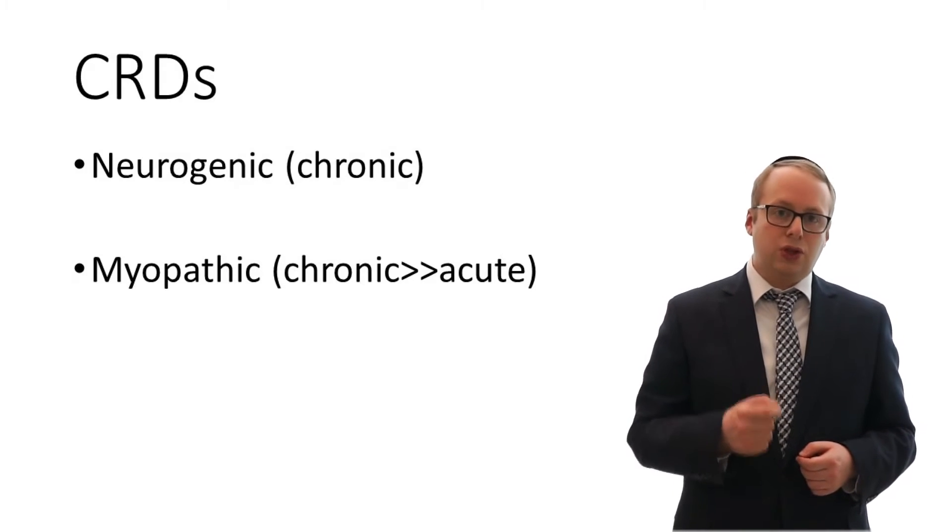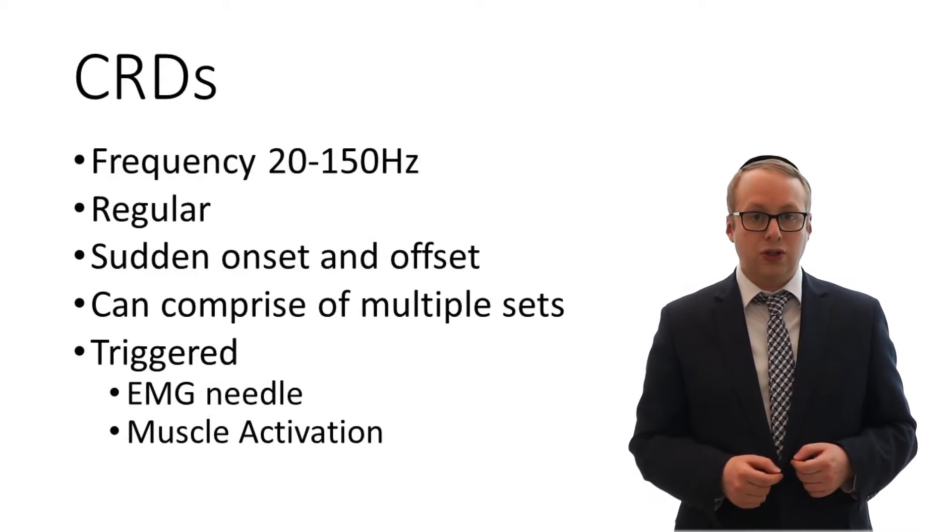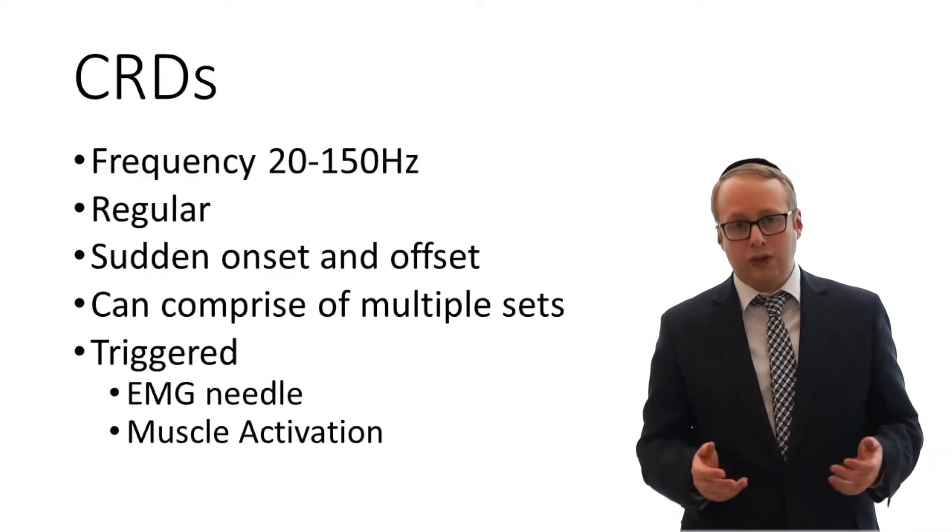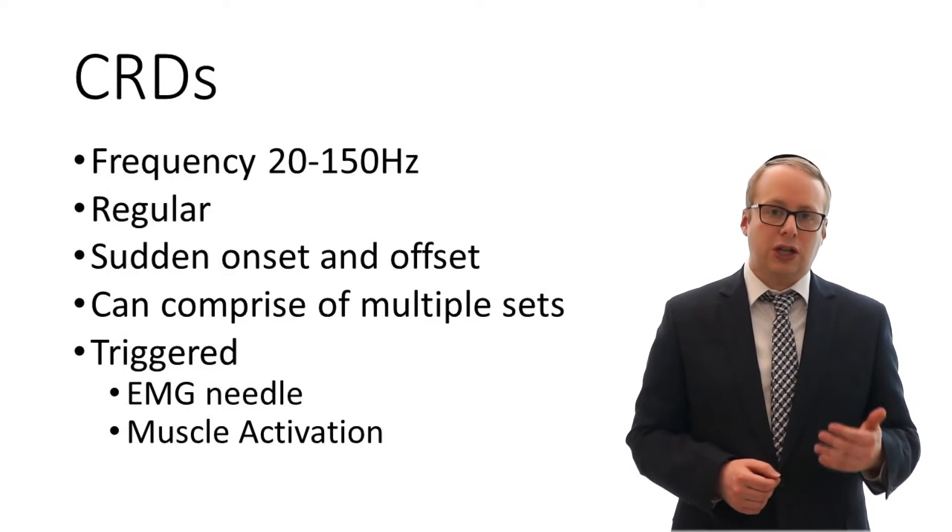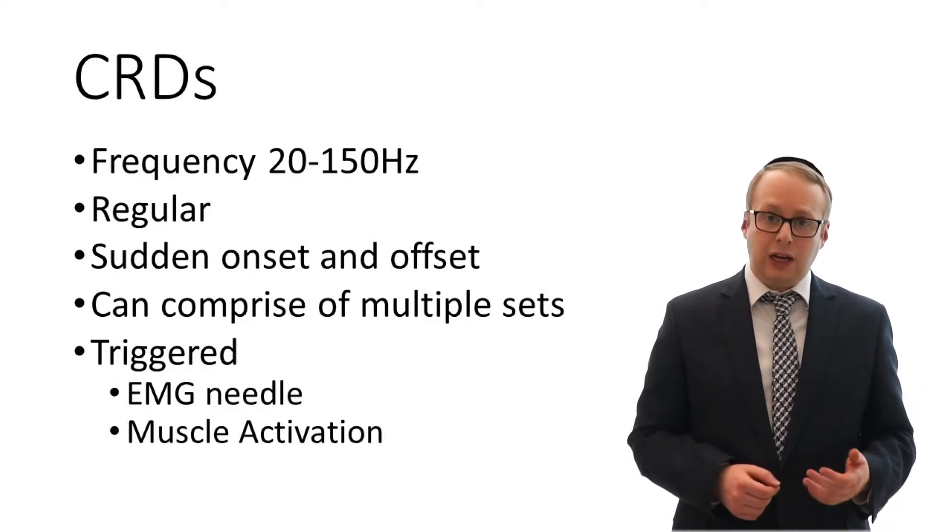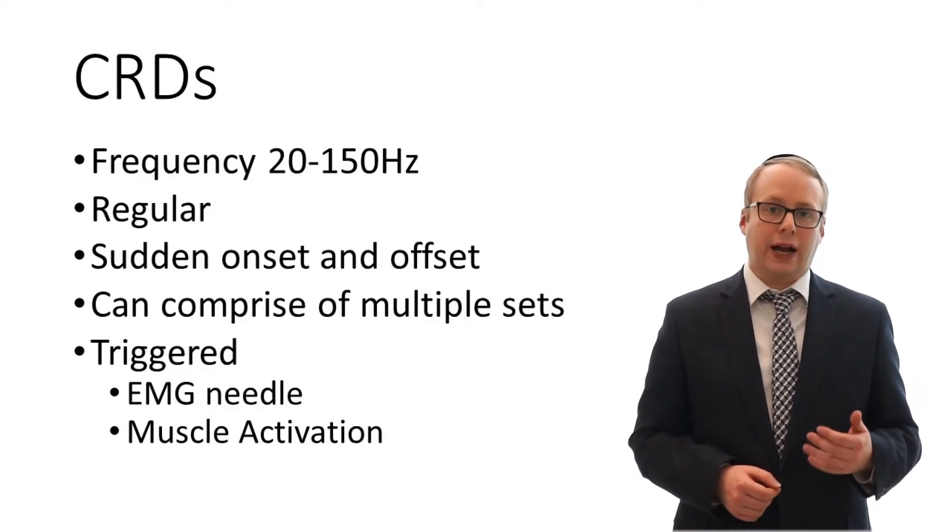CRDs occur in both neurogenic and myopathic conditions. The frequency of the discharges can be very variable between 20 and 150 Hz, but should be regular and should not change in amplitude. They start and stop fairly abruptly and can be triggered by movement of the needle or by voluntary activation.